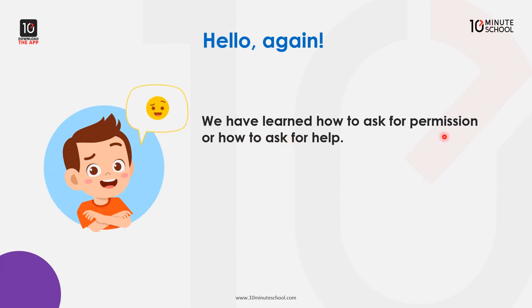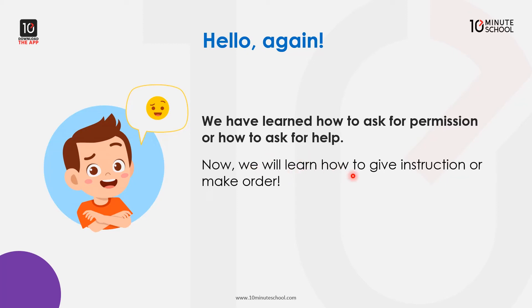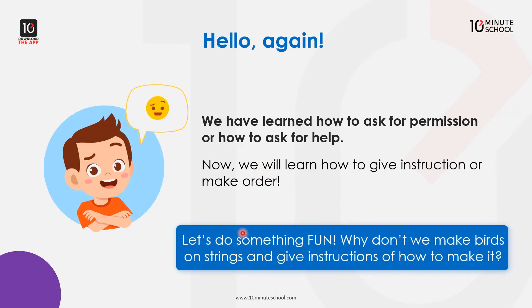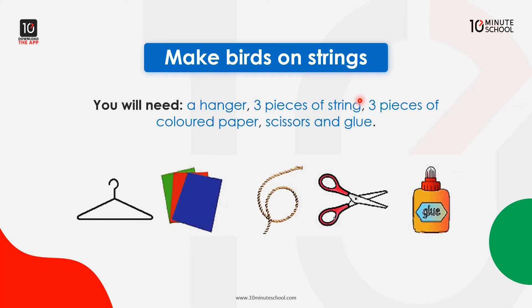Hello again. We have learned how to ask for permission and how to ask for help. Now we will learn how to give instructions or make an order. Let's do something fun — why don't we make birds on strings and give instructions on how to make it? You will need a hanger, three pieces of string, three pieces of colored paper, scissors, and glue.